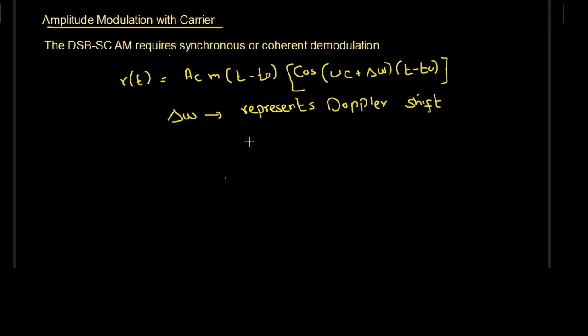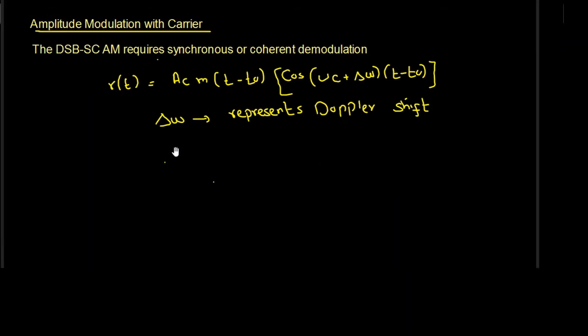This increases the complexity and cost of the receiver. This is acceptable for point-to-point communication where we have one sender and one receiver, but in broadcast communication where we have one sender and multiple receivers, the receiver needs to be inexpensive, cost-effective, and very simple. So for broadcast communication, double sideband suppressed carrier is not suitable.